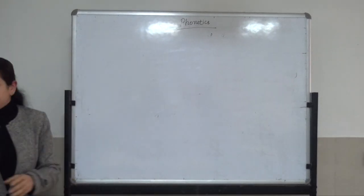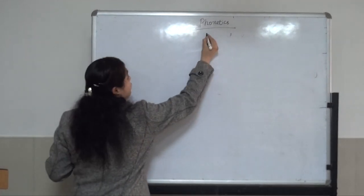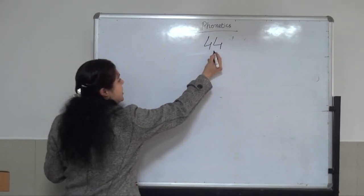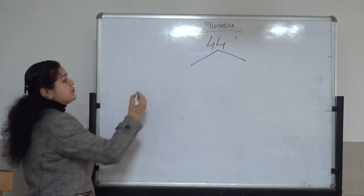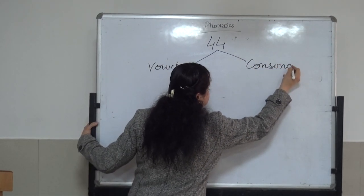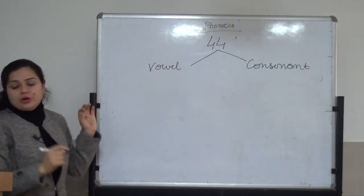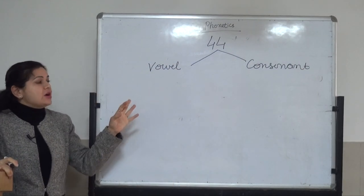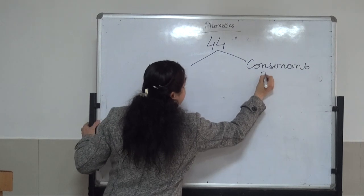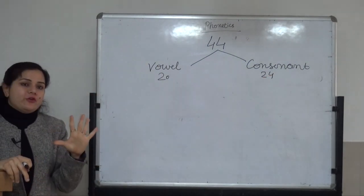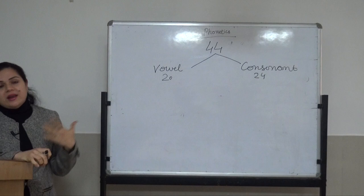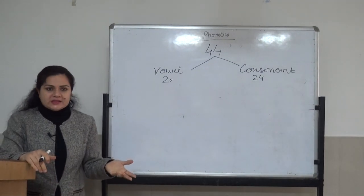There are 44 sounds, and these 44 sounds can be divided into two parts. The first one is vowel sounds and the second one is consonant sounds. There are 20 vowel sounds and 24 consonant sounds. There are 5 vowels: A, E, I, O, U — but the sounds are 20, and here lies all the difficulties and complexities.